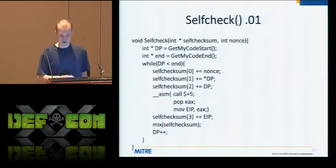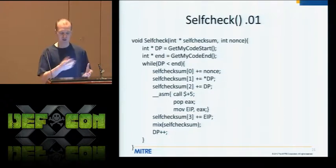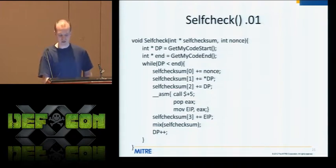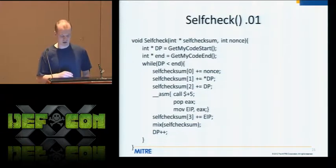Expanding on this, our self-check pseudo-code would: get the start and end of my code, then inside a while loop — which is a very critical component — loop through and incorporate the nonce, the dereferenced data pointer (that's my actual four bytes of code), the data pointer itself. Calculate the EIP using the typical assembly mechanism of calling zero bytes ahead and then popping the return address off the stack. Mix that in as well. Finally there's a generic mix — basically a rotate — because if you don't have it, like a stream cipher, you want to add confusion and diffusion. The rotation is the diffusion, so that a change in one bit will eventually rotate through and affect all the bits.